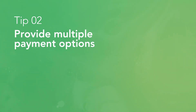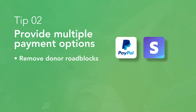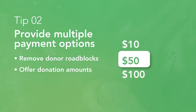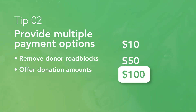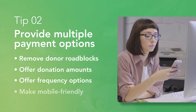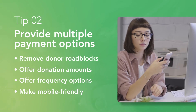Next, you'll want to provide multiple payment options. When you include multiple ways to pay, such as PayPal and Stripe, you remove potential roadblocks for your users. Other ways to make payments more user-friendly include offering suggestions for donation amounts to reduce choice for donors. You can also add one-time and recurring payment options, and you'll want to make sure the forms are mobile-friendly so users can pay on their phones.